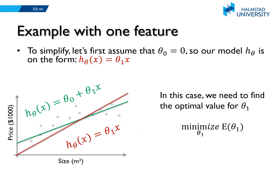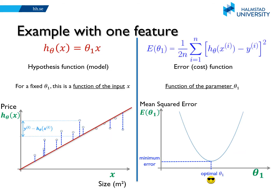To simplify the explanations a little bit, let us assume initially that theta 0 is equal to 0, so our line will go through the origin and we just need to find the optimal value for theta 1. This is our hypothesis function and this is our cost function. The difference between the predicted and the true output is illustrated here. So for a given house with this size, this is the true output — the true price — and this is the predicted output, the predicted price. This shows how the mean squared error or cost changes based on different values of theta 1. For the optimal parameter theta 1, we get this line — it achieves the minimum cost or error.